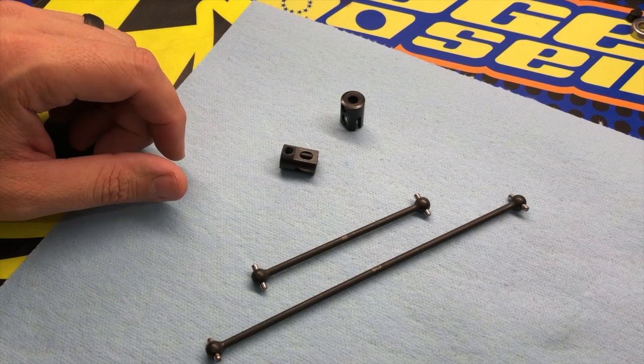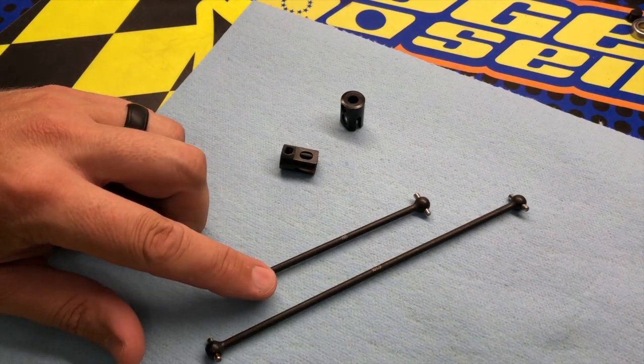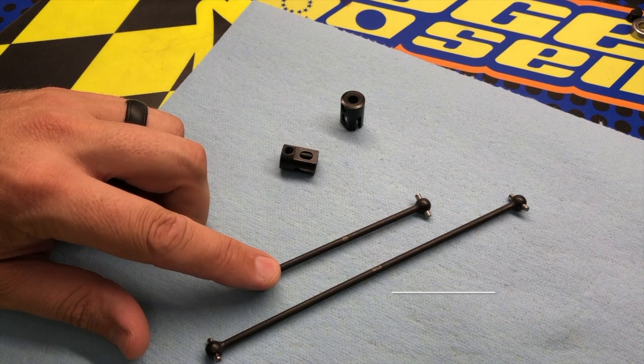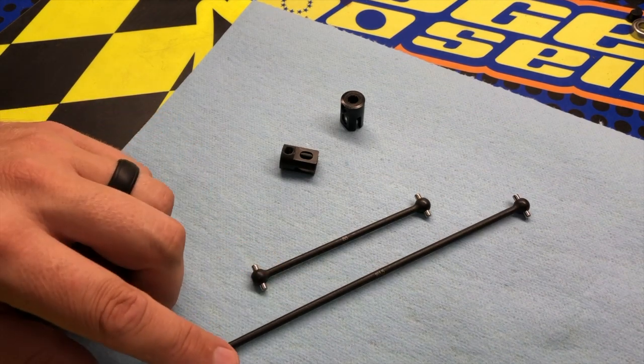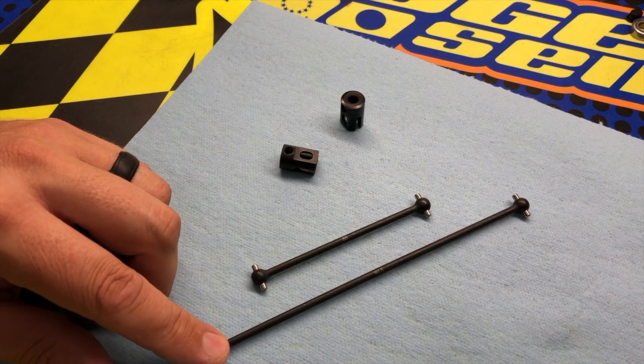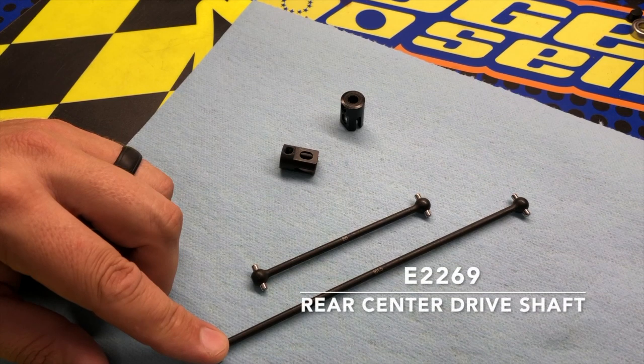Here we have a closer look at a couple new parts for your MBX-18 nitro and electric truck. First is the front center dog bone, part number E-2268. Next is the rear center dog bone, part number E-2269.